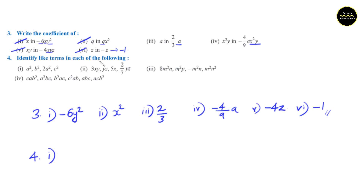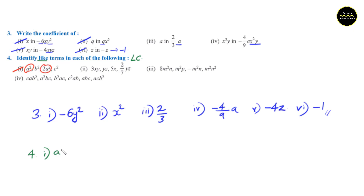Section 4: identify like terms in each of the following. We know that like terms are terms which have the same literal coefficient. We need to look at which of the following terms have the same literal coefficient. Question number 1: a square, b square, 2a square, c square — here a square and 2a square both have the same literal coefficient. So the answer is a square and 2a square. These are like terms.